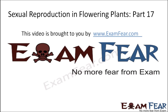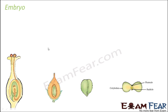This video on sexual reproduction in flowering plants part 17 is brought to you by examfear.com. Now let us talk about the embryo. On one side, the PEC develops into the endosperm, and once the endosperm starts forming, the zygote also starts developing into the embryo.